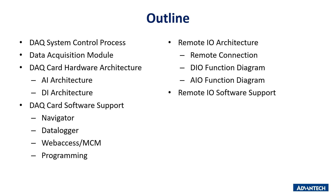The outline of this presentation will go through six chapters. First is the DAQ system control process. In this topic we will take factory machine monitoring as an example and explain what the DAQ system control process is. Second, we will talk about which kind of data acquisition modules Advantech provides and their features. We will also introduce the differences between DAQ card and remote IO, and the software support for these two kinds of products.